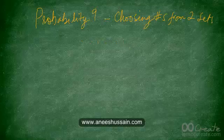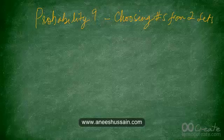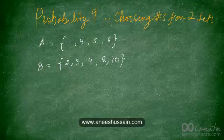Welcome to the ninth video on probability. Here we'll discuss the probability of choosing different numbers from two different sets and either adding, multiplying, or dividing them to get certain values. There is set A, which comprises the numbers 1, 4, 5, and 6, and set B, which comprises the numbers 2, 3, 4, 8, and 10.